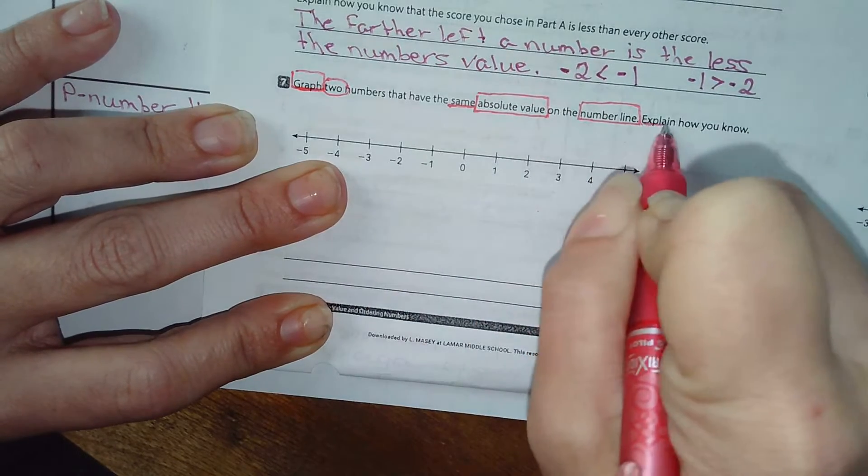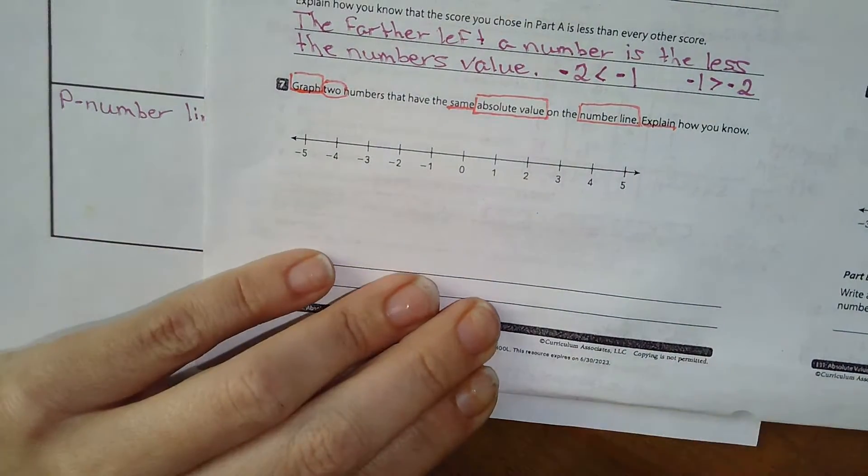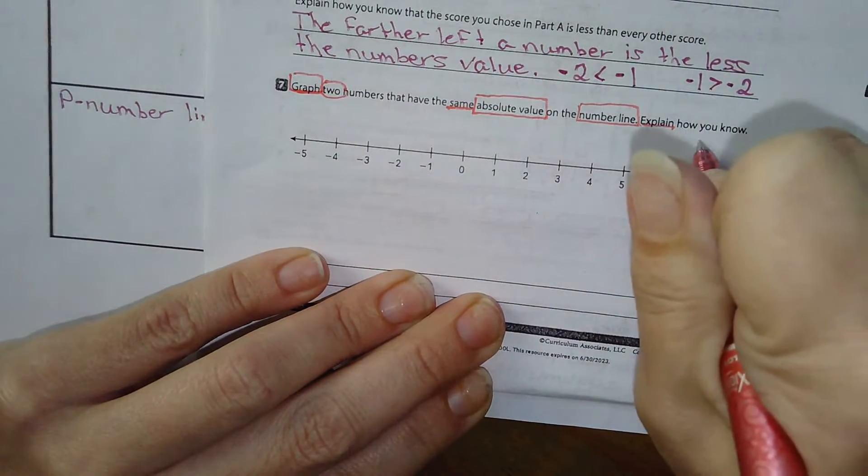Let's graph two numbers that have the same absolute value on the number line. I need to explain it, okay? Even before I answer, I'm going to jot down what I know.